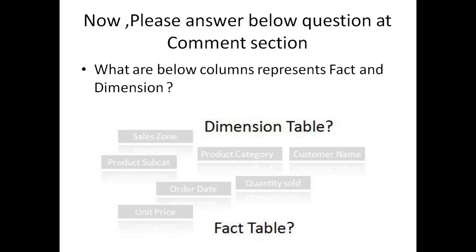Here is a question: which of the below columns represent facts and which represent dimensions? The columns are: sales zone, product sub-category, product category, customer name, quantity sold, order date, and unit price. Please classify them as dimension table columns or fact table columns.